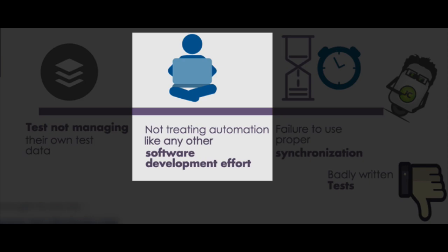Number eight, not treating automation like any other software development effort. Test automation is a software development effort. You need to use the same practices and procedures as your development teams to be successful with it. If you treat it like a one-and-done thing, you're going to have issues. Test scripts, like any software, need to be maintained over time. You need to be constantly refactoring and changing based on how your application's changing. Treat it like any software development project using code reviews, version control tools, and all those types of things.